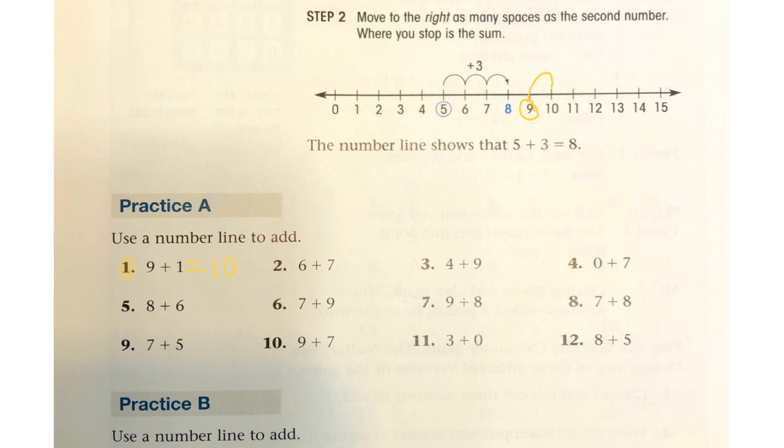Alright, let's erase that. So I'll take a look at number 2, 6 plus 7. So if we count 1, 2, 3, 4, 5, 6, we can move 7 places to the right and then we'll see what we get. 1, 2, 3, 4, 5, 6, 7, 13. 6 plus 7 equals 13.